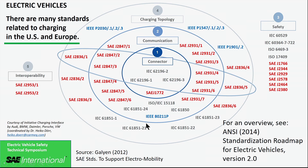With regards to electric vehicles, there's a huge number of standards that exist within SAE and within other places. This detailed graphic attempts to give you a sense of all the possibilities that exist. This comes from an ANSI document that gives the standardization roadmap for electric vehicles. There are standards for connectors, standards for communication because the connectors need to talk to something, and standards related to charging. There are just so many of them that it's often difficult for people to keep up on what's happening.